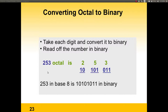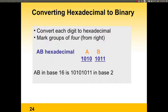For octal to binary, you take the digits one by one and convert each digit into its binary equivalent. So 3 becomes 011, 5 becomes 101, and 2 becomes 010. So 253 in base 8 gives this binary number. The same applies for hexadecimal to binary — convert A and B each individually into binary, then concatenate them together to get the binary equivalent.